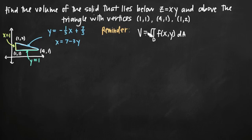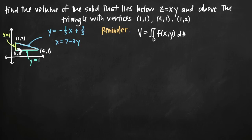As a reminder, I've written the formula that we'll be using to find the volume, and I've also drawn a picture of the triangle with the given vertices. You'll notice this triangle here with vertices at (1,1), (4,1), and (1,2). I've also labeled this diagram by defining the equations of each of the lines connecting the three vertices — all three sides of the triangle.